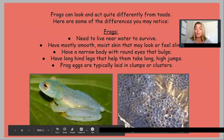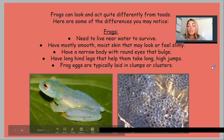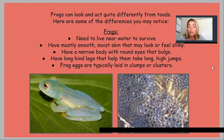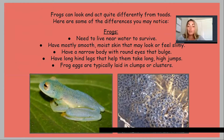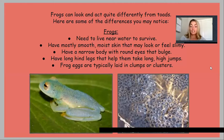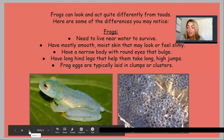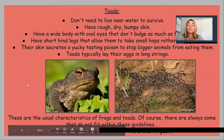Frogs can look and act quite differently from toads. Frogs need to live near water to survive — their skin has to stay wet in order to get oxygen. They have mostly smooth, moist skin that may look or feel slimy. They have a narrow body with round eyes that bulge. They have very long hind legs that help them take long, high jumps. Frogs typically lay their eggs in clumps or clusters.